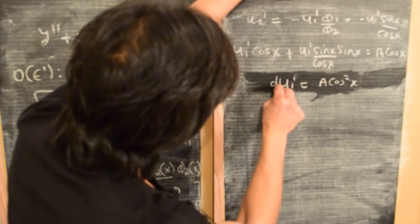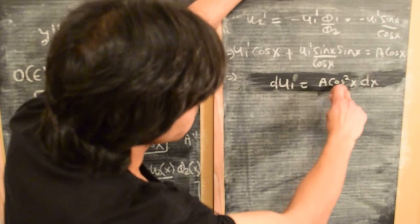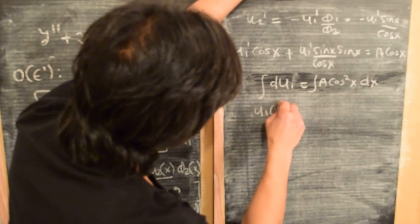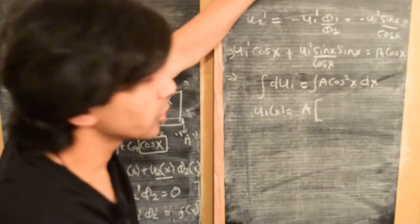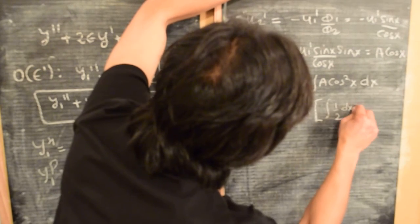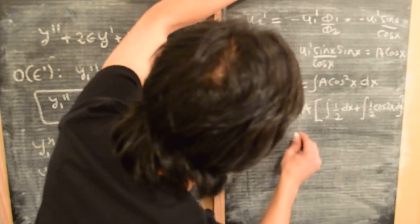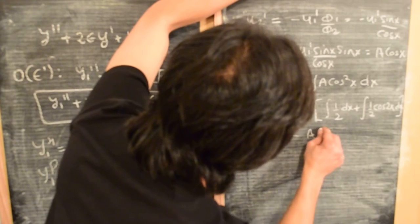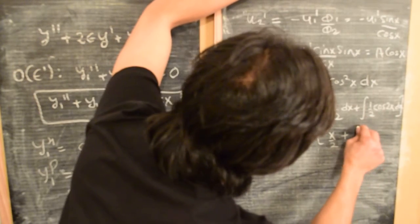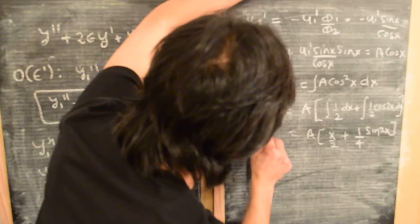Now we can integrate to find u₁. We have du₁/dx = a·cos²(x). Writing cos²(x) as ½ + ½·cos(2x) and integrating gives u₁(x) = a·(x/2 + (1/4)·sin(2x)).